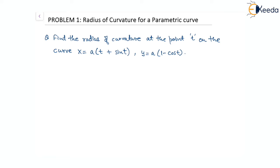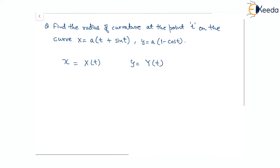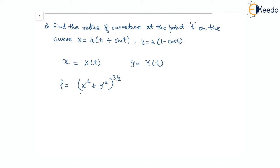We can see that both x and y are functions in terms of t, so this comes under the category of parametric curve. For a parametric curve, the radius of curvature rho is given by the expression: x-dash squared plus y-dash squared, whole to the power of 3 by 2, divided by x-dash y-double-dash minus x-double-dash y-dash.